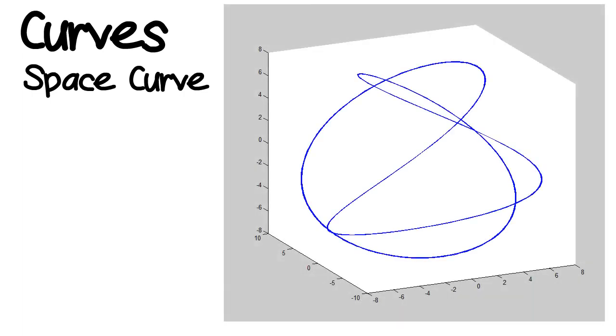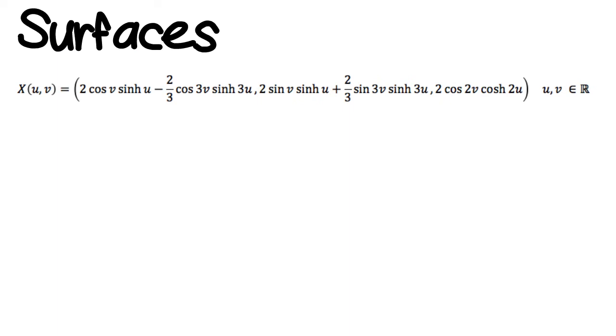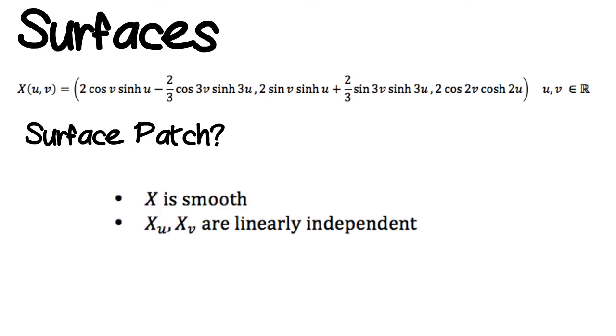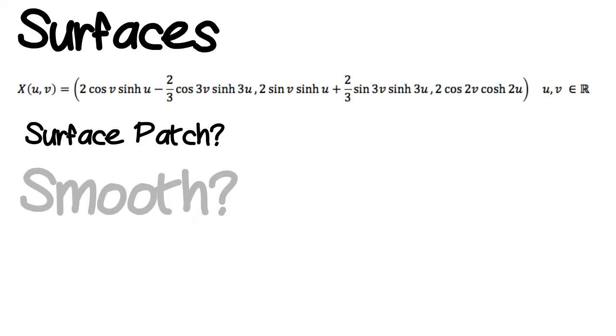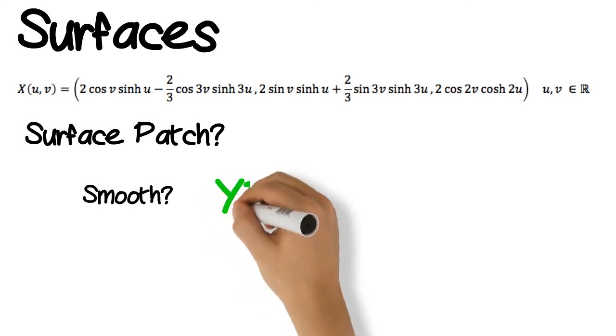Having looked at the curves, we can move on to more advanced materials. A surface is geometrically described as a bent piece of paper. Our formula for our map is... There are many different types of surfaces. We can test to see if X is a surface patch. A surface patch S is said to be one when X is smooth and if the partial derivatives XU and XV are linearly independent.